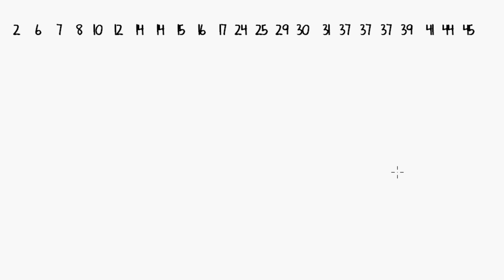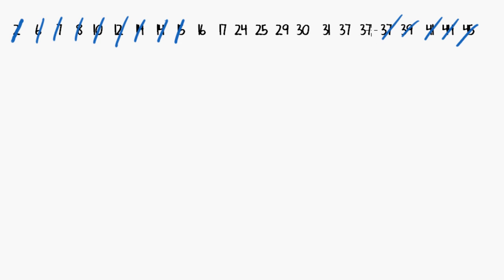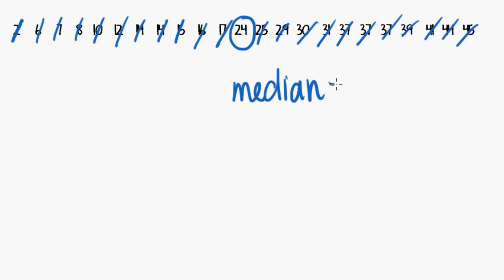If you have a longer string of data like this, you can cross off more than one from the bottom and the top as you go, so long as you do it in a balanced amount. For example, if you do 3 from the bottom, you have to do 3 from the top; if you do 5 from the bottom, you have to do 5 from the top. I'll start with 5 from each side, then 4 from each side, then go in ones until I reach the middle. The median is 24.